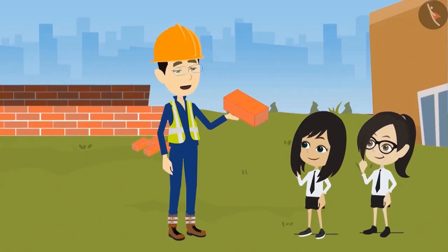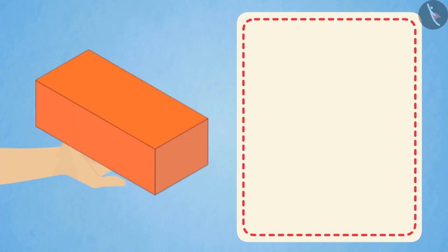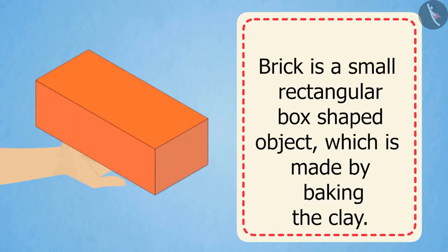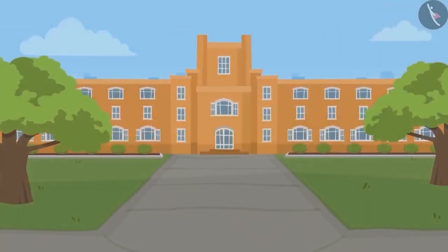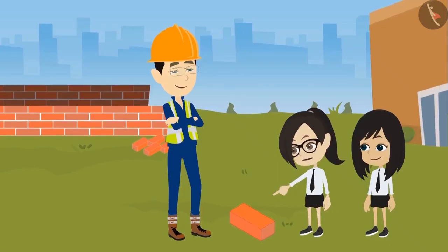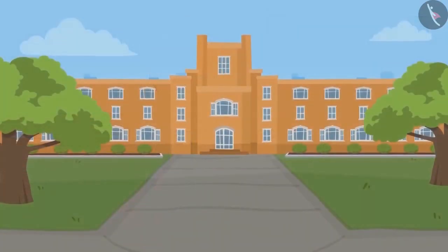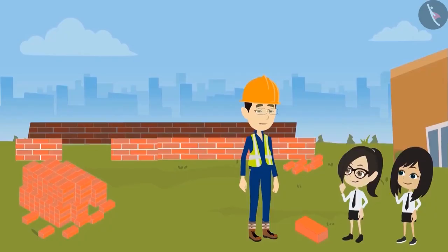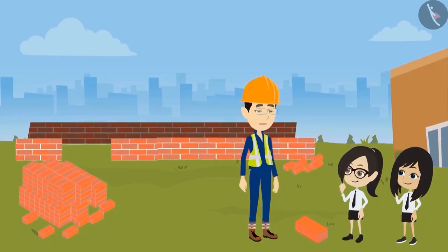This red color small box-shaped object you are looking at is called a brick. A brick is a small rectangular box-shaped object which is made by baking the clay. So are the walls of our school also made of bricks? Yes, and not just this school — your home, all the buildings in this city, bridges are all made of bricks. Bricks are used in almost every construction work.